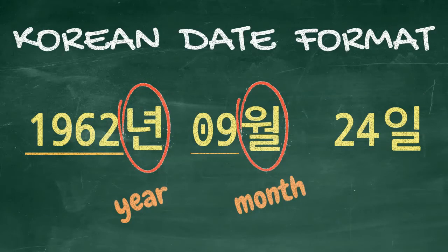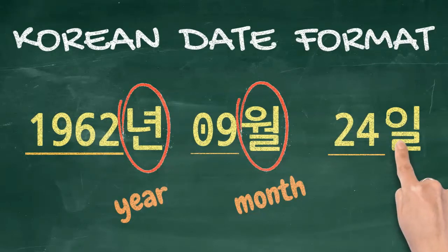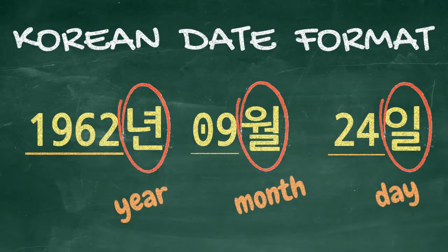Take note that there are two words for month: 월 (wol) and 달 (dal). They are used in different contexts — when stating months, we use 월 (wol). Lastly, the specific date in the month is followed by 일 (il), meaning day.